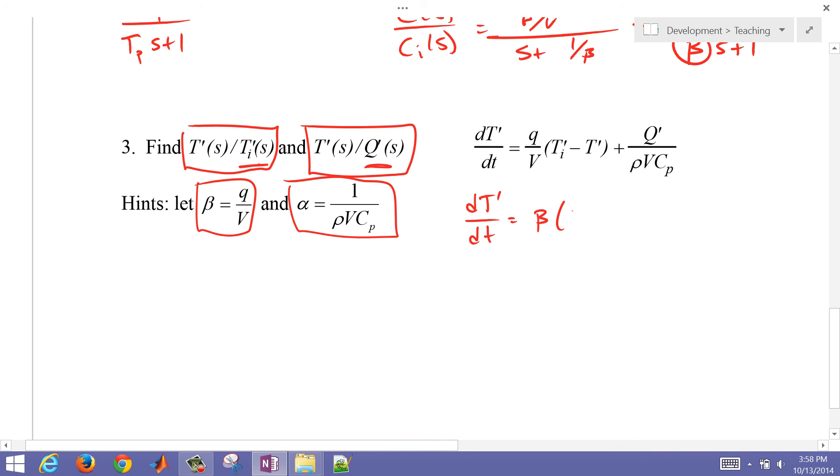So let me just go ahead and write that in terms of alpha and beta, just so I don't have to carry around a lot of extra terms here. So I have dT'/dt equals beta times T inlet minus the temperature coming out, plus, and then I'll do alpha times Q bar, or Q prime.